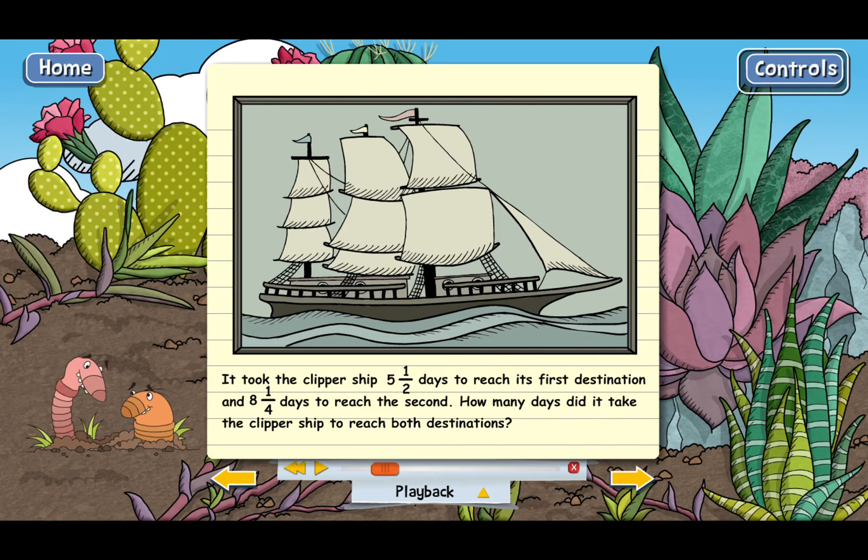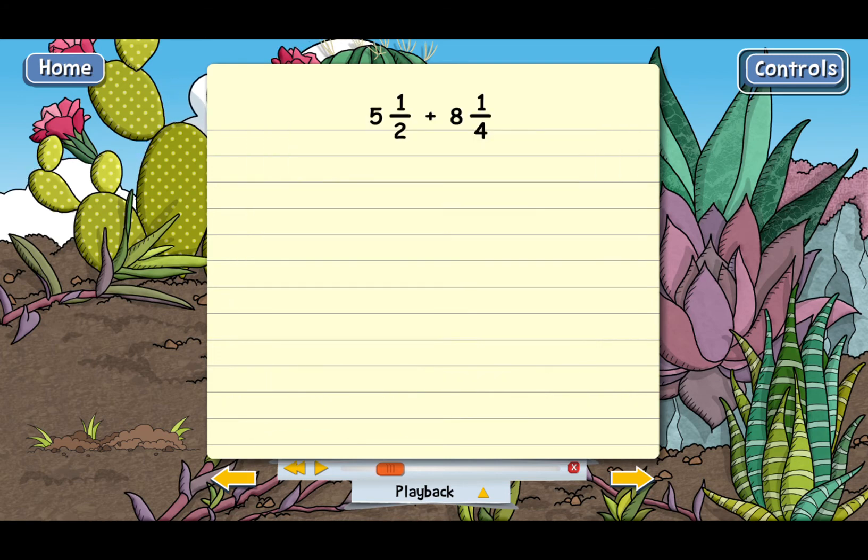Here, what we need to do is add five and one half to eight and one-fourth. And the way it's done is to just add the whole number parts first. The whole number parts are five and eight. So you take five plus eight, which is 13.